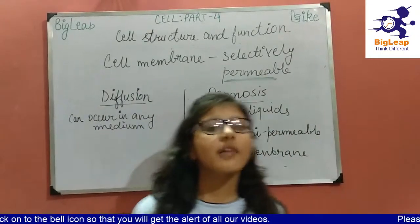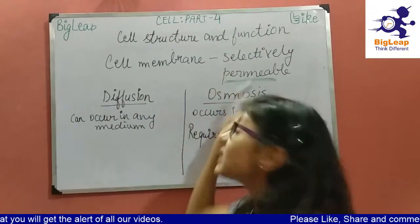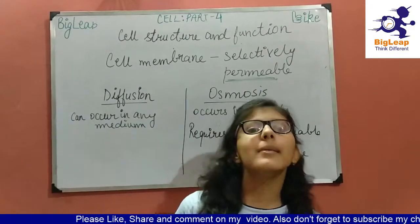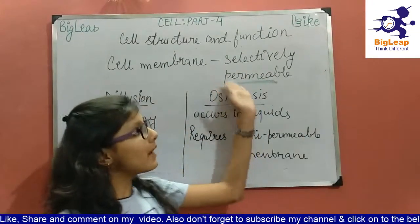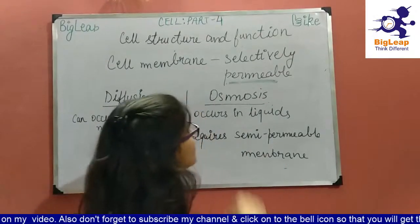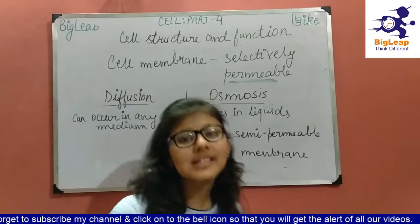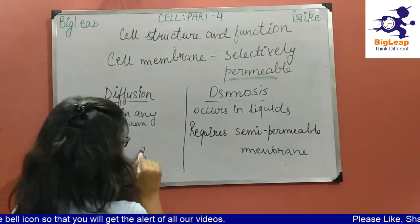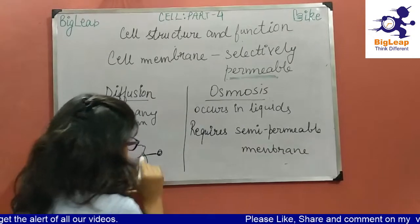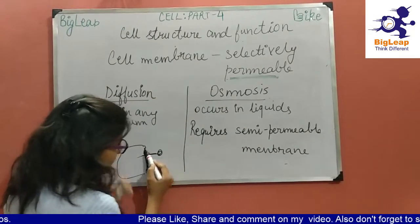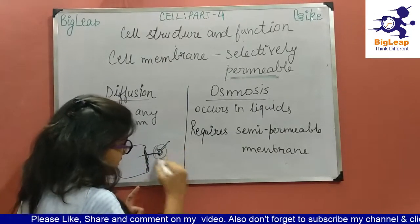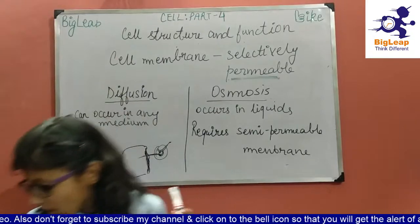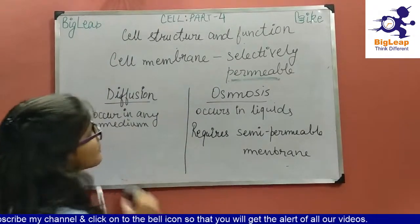The cell membrane is the outer covering of the cell. It is a selectively permeable membrane, meaning it allows only certain things required by the cell to pass through. If a particle is useful for the cell, it will be allowed in; otherwise it will not be permitted to enter the cell.